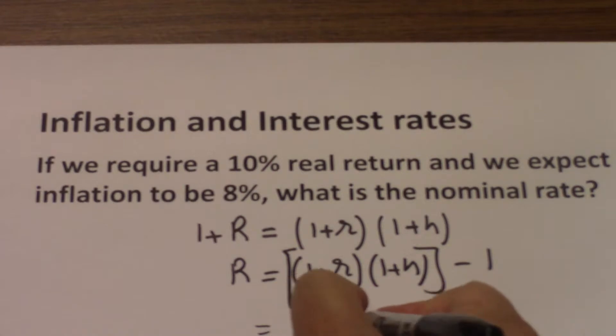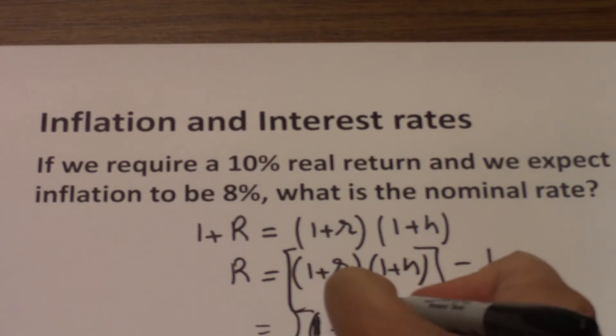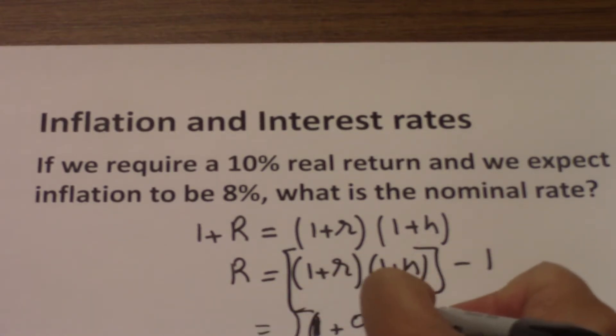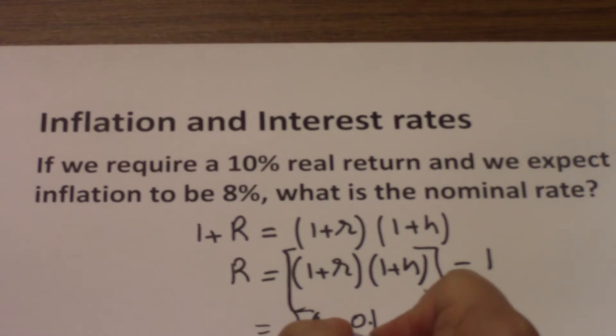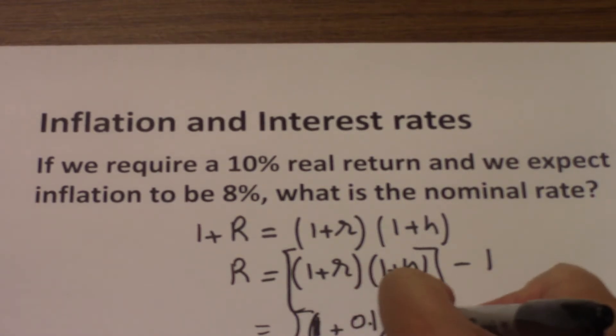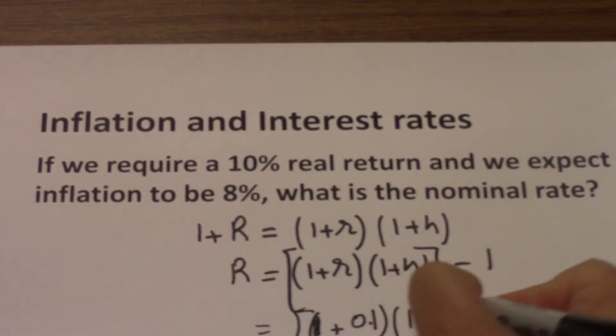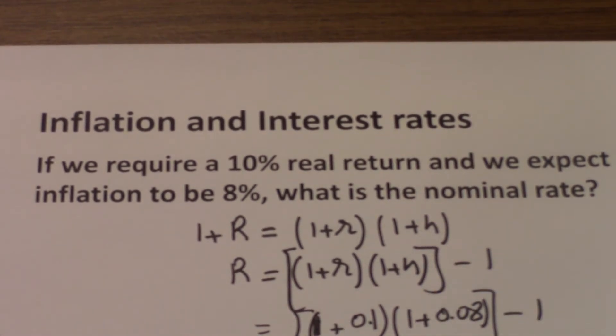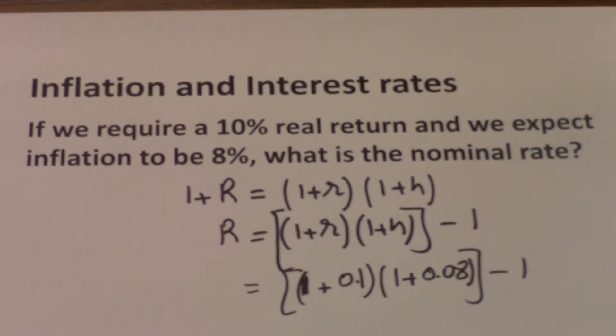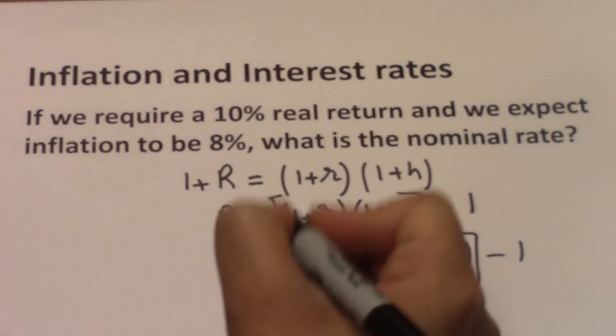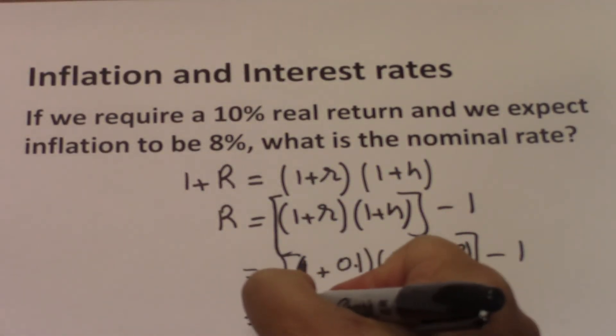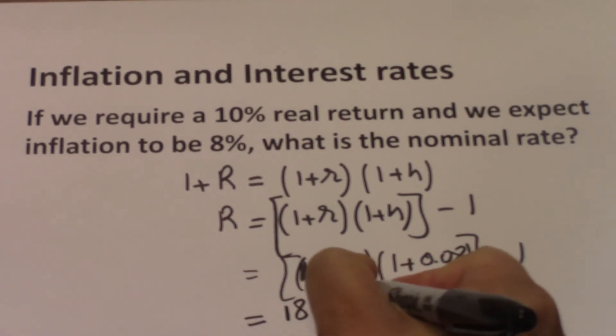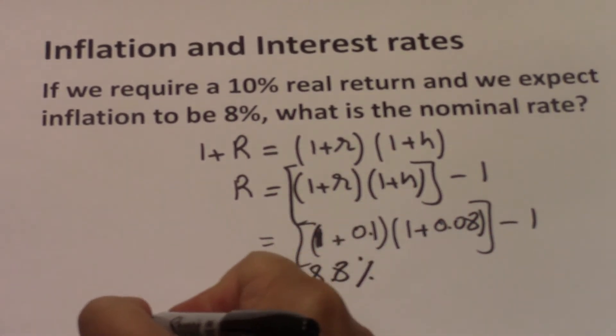This means 1 plus the real rate, which is 10% or 0.1, so 1 plus small r is 1 plus 0.1, times 1 plus the inflation. Inflation is 8% or 0.08 minus 1, the whole thing minus 1. If you were to calculate this, you are going to have a return of 18.8%.